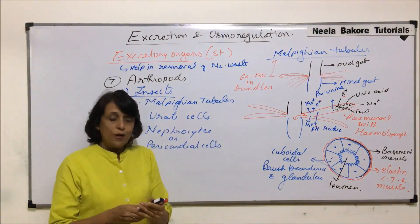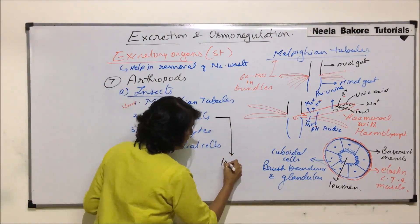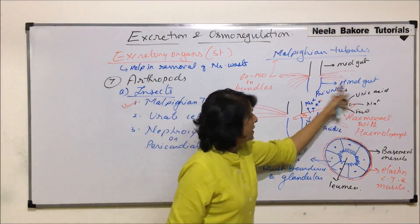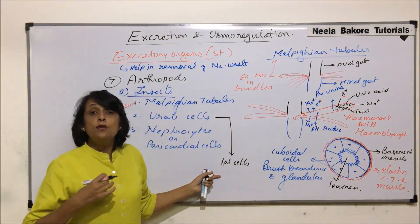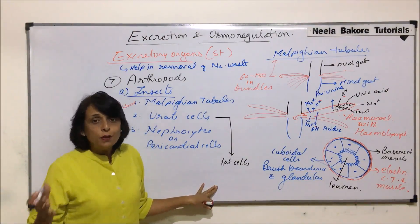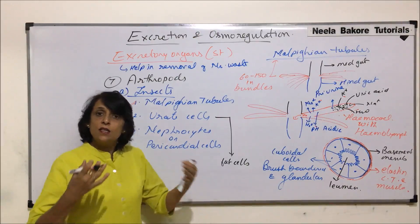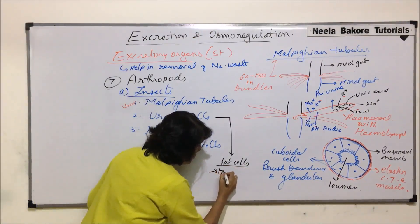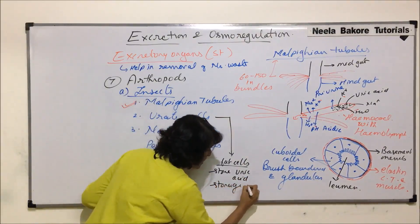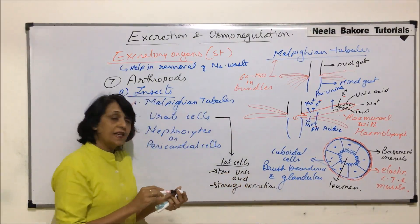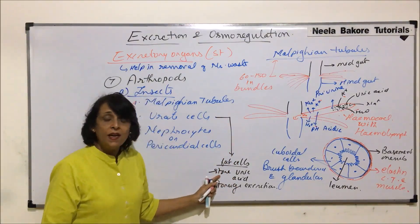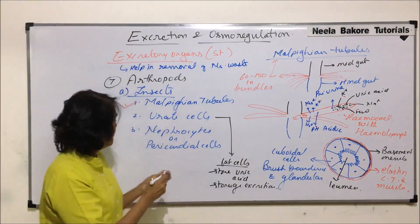Urate cells are also known as fat cells. They are present in the hemolymph — in the body cavity. These fat cells keep storing uric acid. Once they get completely loaded, they remain that way and do not throw the uric acid out of the body — they just store it. This type of excretion is known as storage excretion, because they are removing uric acid from the fluid and keeping it inside the cells.